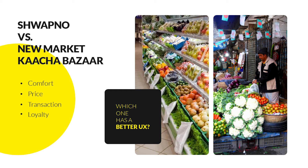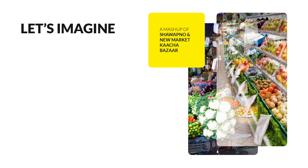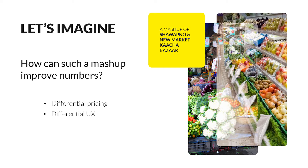Confusing? Let's make it even more confusing. Let's imagine a mash-up of Shopno and New Market Kacha Bajar — a combination where all the best attributes of both marketplaces are present. Why would you want to imagine, let alone go to such a place? It's because you can allow differential pricing and differential UX. Imagine offering different prices to different people as they're willing to pay, offering different user experiences — if someone likes AC, you give them AC; if someone likes to bargain, you let them bargain.